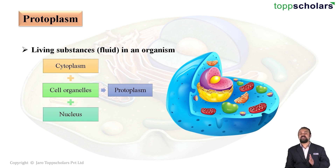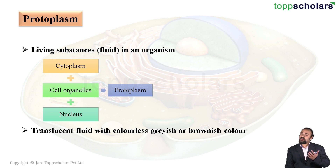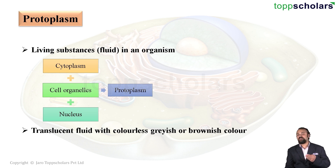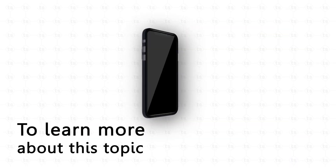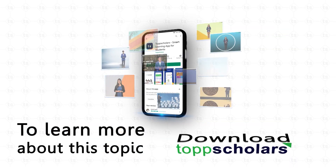So in a way, everything which is present inside the cell membrane is called the protoplasm — that is, the cytoplasm, cell organelles, and the nucleus. This protoplasm can be described as a translucent fluid which may be colorless, grayish, or brownish depending upon the type of cell.